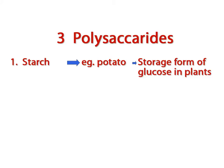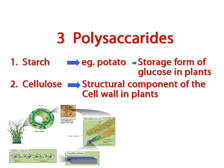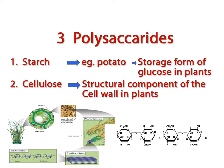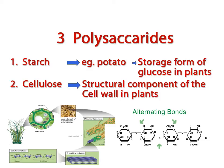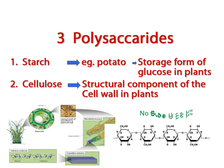The second polysaccharide you need to know is called cellulose. Cellulose makes up the cell walls in plants. We cannot digest cellulose because our system is not designed to break the types of bonds found between the monosaccharides that make up cellulose. Notice the bonds between the monosaccharides are shown as alternating to indicate a unique type of bond. Because we cannot digest cellulose, it goes through our digestive system as fiber. We can identify a diagram of cellulose as a long chain of monosaccharides bonded together with no side chains or branches and with alternating bonds.